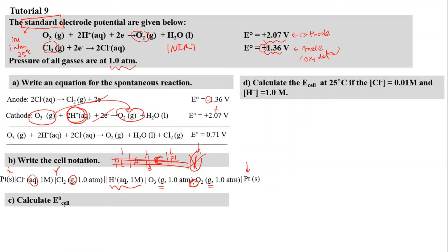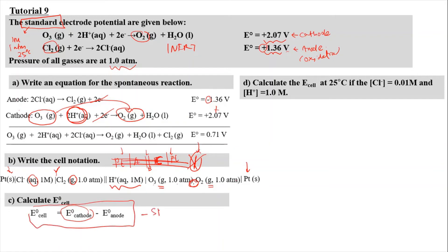Now we calculate the E° cell. E° cell equals E° cathode minus E° anode, where E° cathode is 2.07 volts and E° anode is positive 1.36 volts from the standard reduction potential values. We must take SRP values, which refer to reduction — not the negative sign, as that refers to oxidation. So: 2.07 minus 1.36 gives positive 0.71 volts.